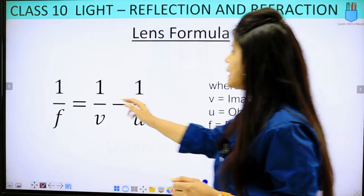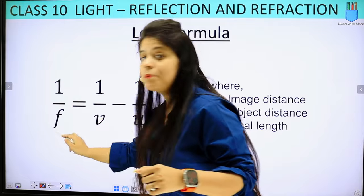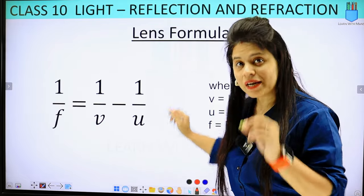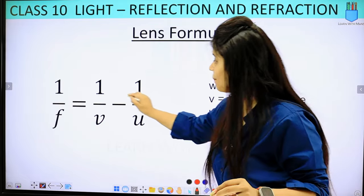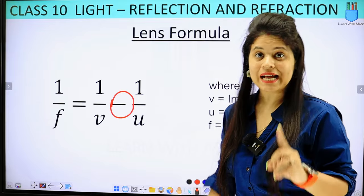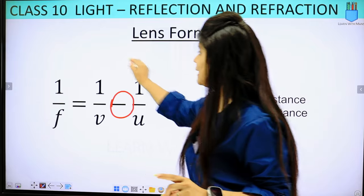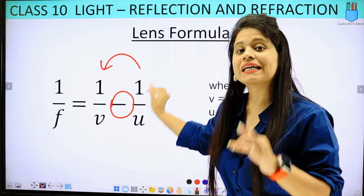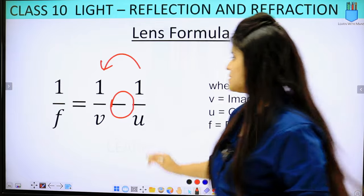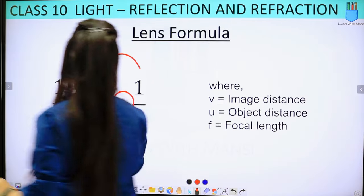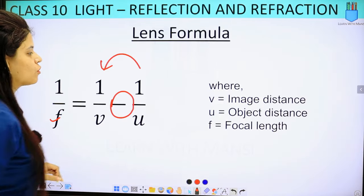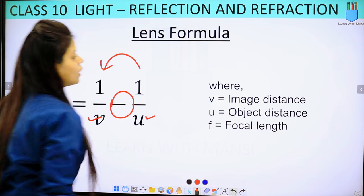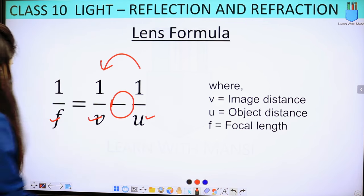If we talk about the lens formula: 1 upon f equals 1 upon v minus 1 upon u. Here is the place where there is a plus changed to minus, so we don't have to take care of this — 1 upon v minus 1 upon u will remain. Here f is the focal length, v is the image distance, and u is the object distance.